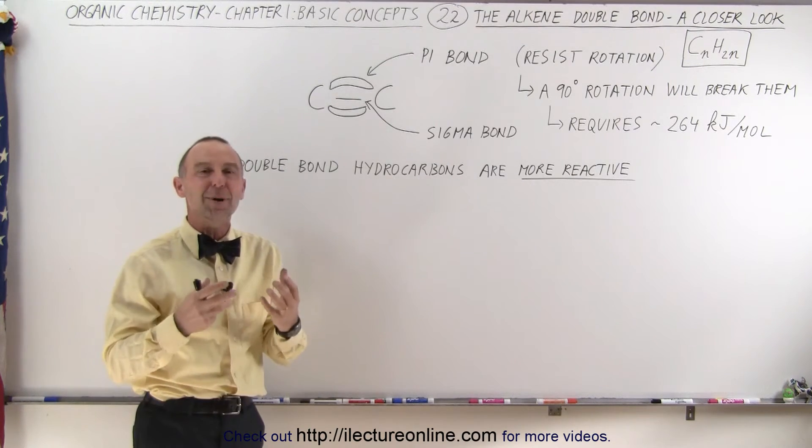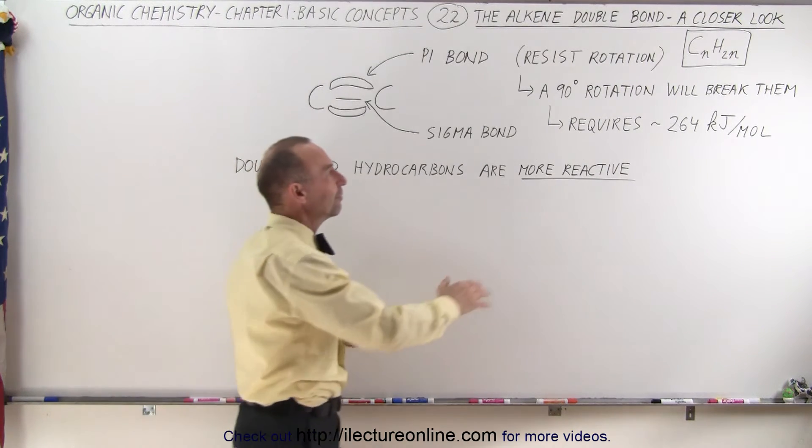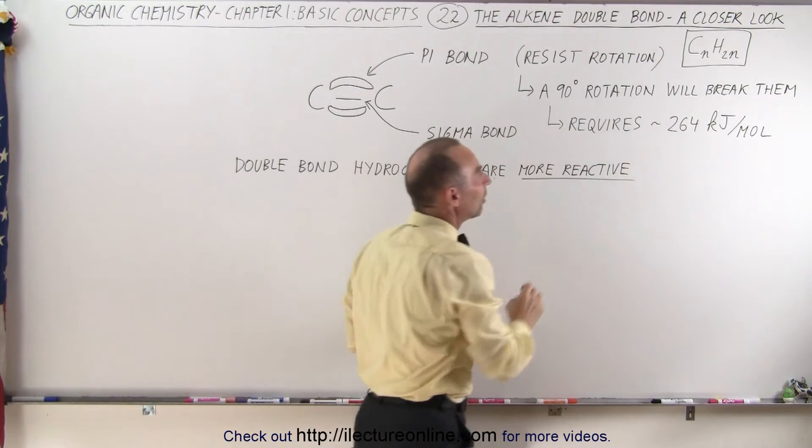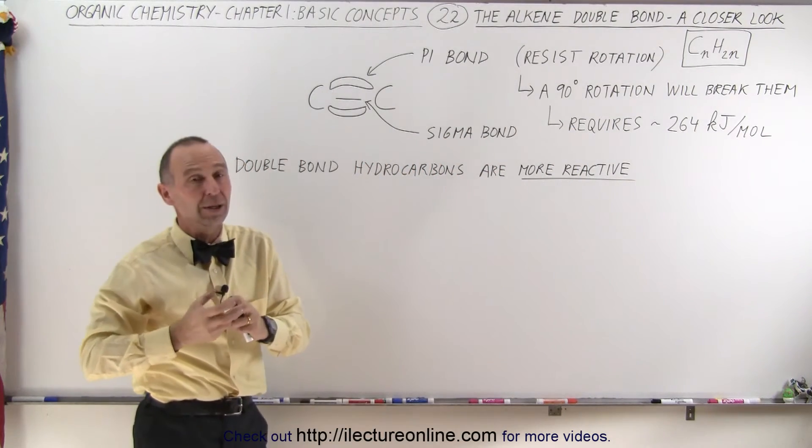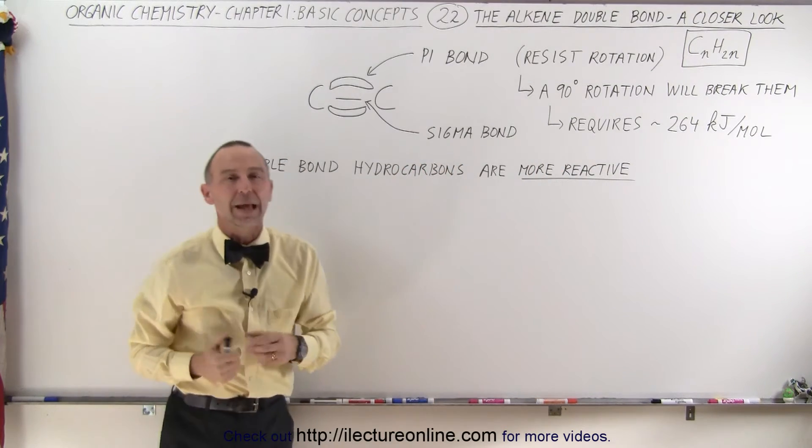Also, the pi bonds specifically prevent the rotation of the molecule. As a matter of fact, if you can rotate them by 90 degrees, you will actually break the bond. That requires about 264 kilojoules per mole.